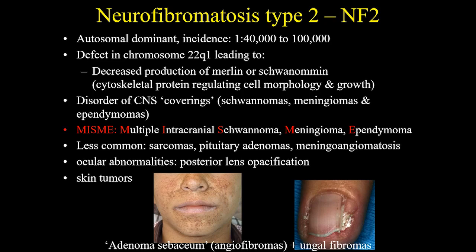Let's move on to neurofibromatosis type 2. It is less common than NF1. It is also an autosomal dominant disease with a defect in chromosome 22. It is a disorder of CNS covering. A useful mnemonic for NF2 includes the initials of multiple intracranial schwannomas, meningiomas, and ependymomas. There are less common tumors that can be associated with NF2, and ocular and skin abnormalities can be very common in this disease.